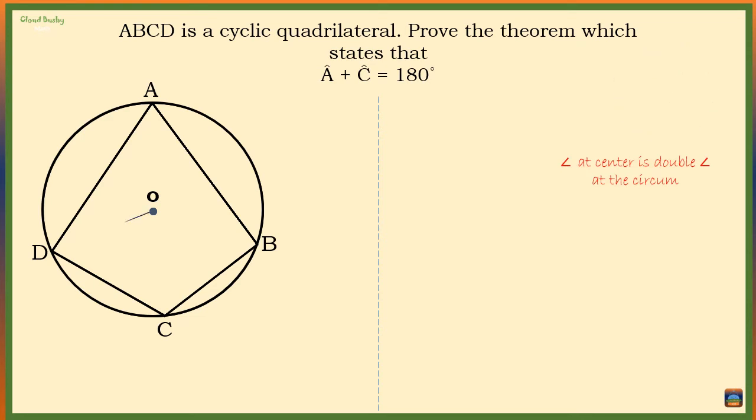Let's draw the radius from the center to point D and another radius from the center to point B. So we now have two angles at the center of the circle. Let's name them O1 and O2. Angle A is subtended by arc BD.